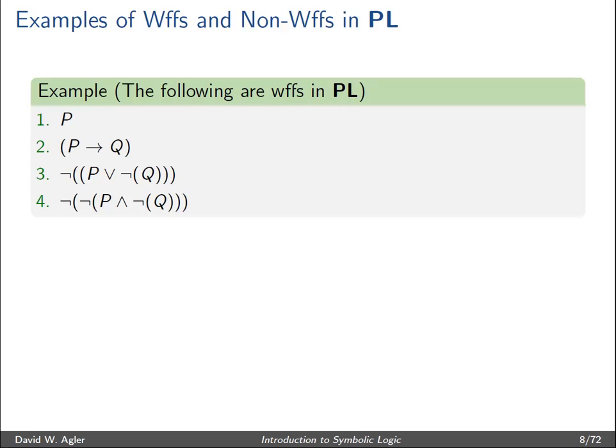In the first case, we just have P, and this is a WOOF simply because every propositional letter is a WOOF. Second, we have a more complex formula. We know that both P and Q are WOOFs because every propositional letter is a WOOF. One of the rules allows us to form the open parentheses P right arrow Q close parentheses — since P is a WOOF and Q is a WOOF, we can put the right arrow between them and parentheses around them.